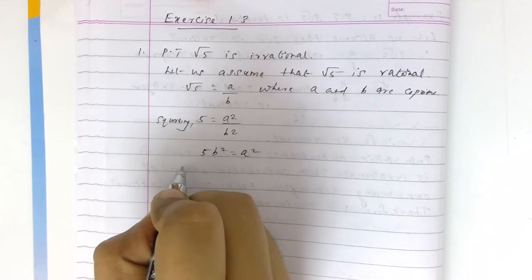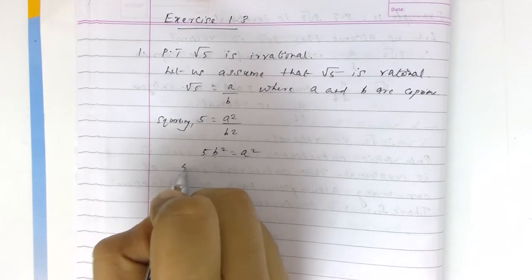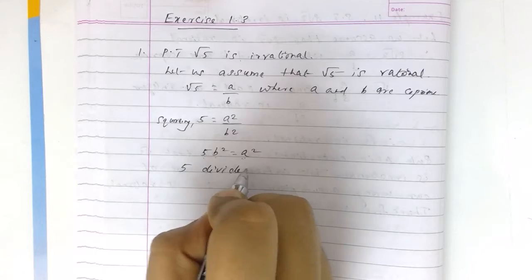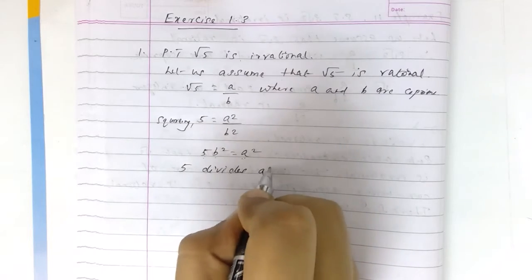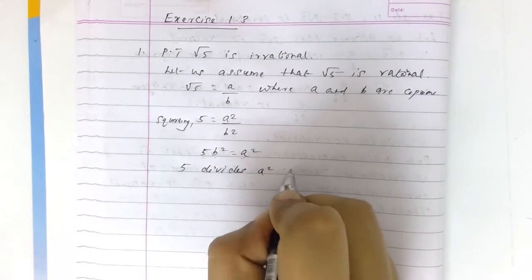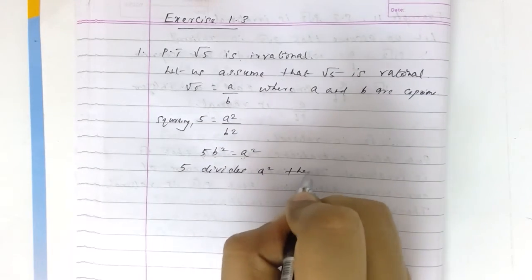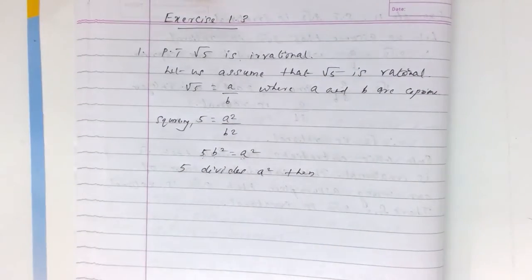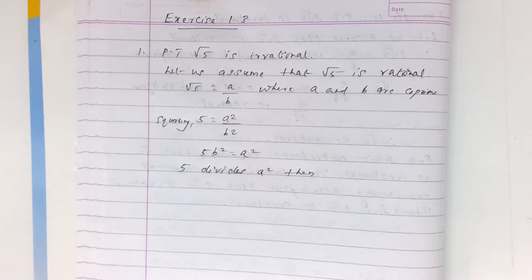We have the result: 5 divides A². Now by Theorem 1.3 — let P be a prime number; if P divides A², then P divides A also.